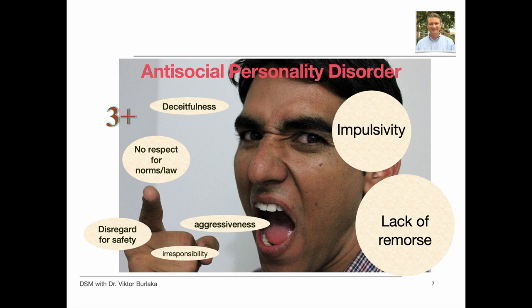Clients with antisocial personality disorder often have a history dating before age 15 of destroying property, serious rule violation, or aggression against people or animals. Since then, they may lie, con, or give an alias while engaging in behaviors that warrant arrest, whether or not they have been actually detained. Relying on impulse, they tend to fight or assault others and generally fail to plan their activities. They show no remorse for this behavior other than feeling sorry if caught, refuse to pay debts or maintain steady employment, and may irresponsibly place themselves or others in danger.